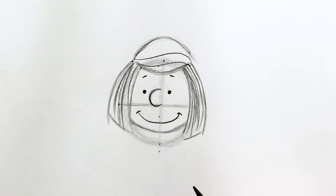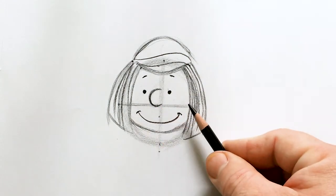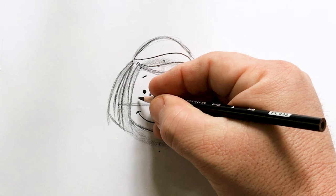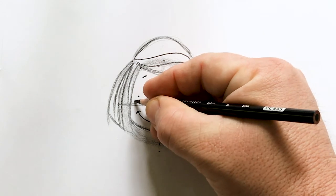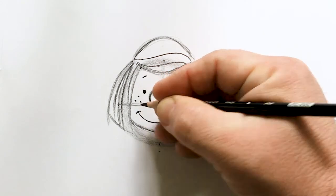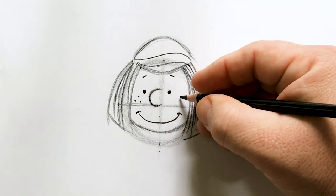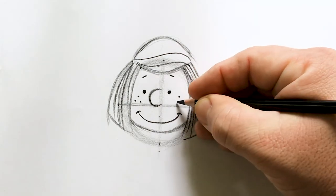Now it doesn't look like Peppermint Patty until you add the freckles. These are just three dots. Dot, dot, dot. In fact, if you were to play connect the dots with Patty, these would look just like a triangle.